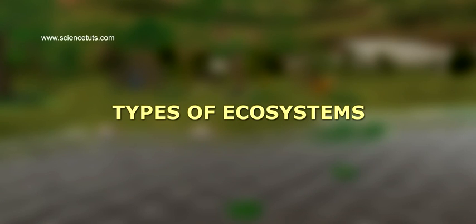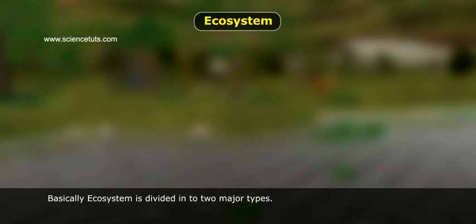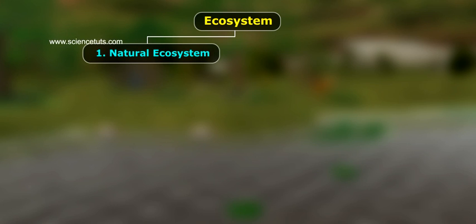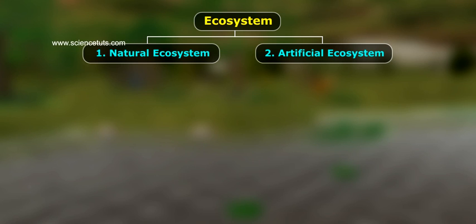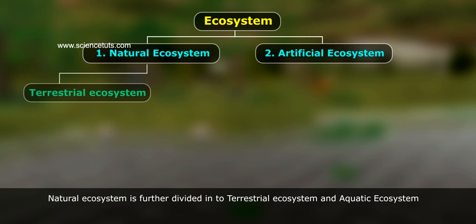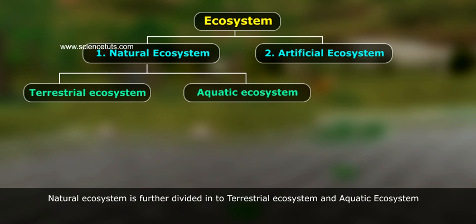Types of Ecosystem. Basically, ecosystem is divided into two major types: Natural Ecosystem and Artificial Ecosystem. Natural ecosystem is further divided into terrestrial ecosystem and aquatic ecosystem.